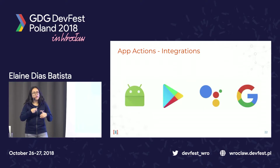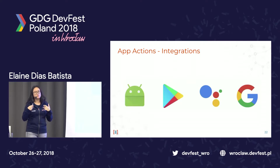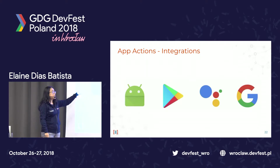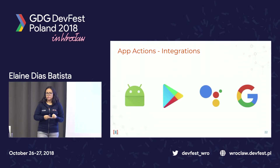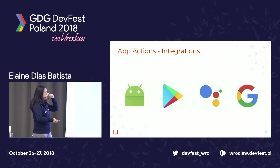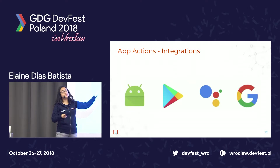Where in the system will users get these suggestions for their next action? On Android through the Android UI: on the App Launcher, or on Smart Text Selection — when you select text, based on that content Google can suggest an action. Also on the Play Store, on the Google Assistant app for Android, and on Google Search.